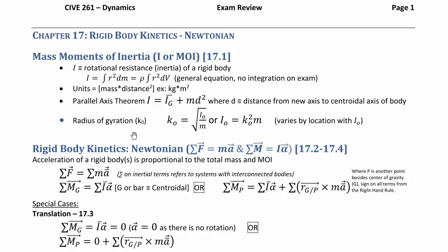We also talked about the radius of gyration, which equals the square root of the moment of inertia about that same point divided by m. It's often used in the form: if you're given a radius of gyration about a point and want the moment of inertia, square that radius of gyration and multiply by mass to get your moment of inertia.